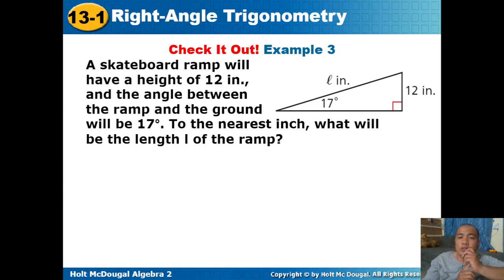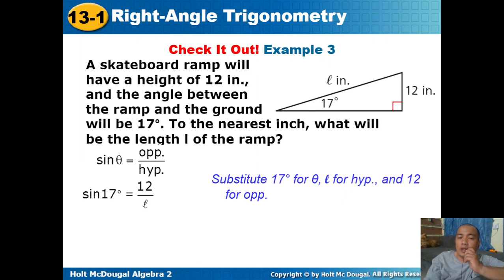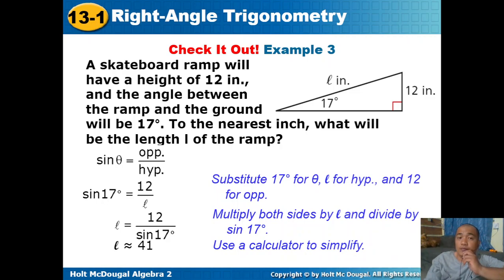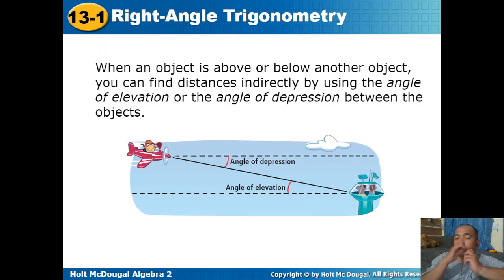A skateboard ramp will have a height of 12 inches and the angle between the ramp and the ground will be 17 degrees. To the nearest inch, what will be the length L of the ramp? The angle is 17 degrees, the opposite side is 12 inches, and L is the hypotenuse. We use the sine function: sine 17 degrees equals 12 over L. Solving for L: L equals 12 divided by sine 17 degrees. Using a calculator, L is approximately 41 inches.